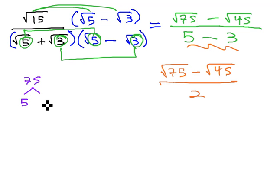75 is 5 times 15, and 15 is 5 times 3. So we see two 5's under the radical, that comes out, leaving the 3 behind.